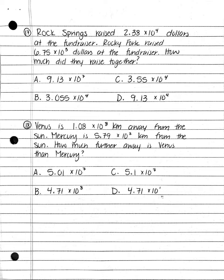Number 17. Rock Springs raised 2.38 times 10 to the fourth power dollars at a fundraiser. Rocky Fork raised 6.75 times 10 to the third dollars at the fundraiser. How much did they raise together? A. 9.13 times 10 to the third power; B. 3.055 times 10 to the fourth power; C. 3.55 times 10 to the fourth power; or D. 9.13 times 10 to the fourth power.